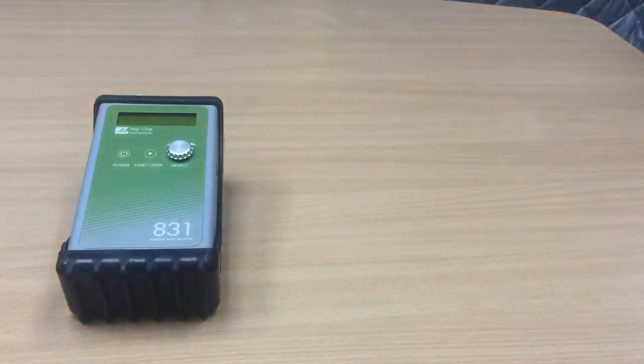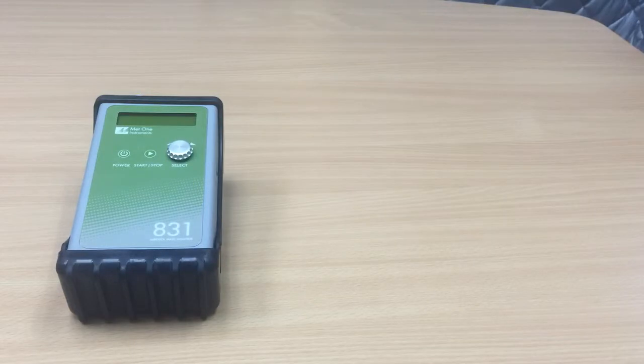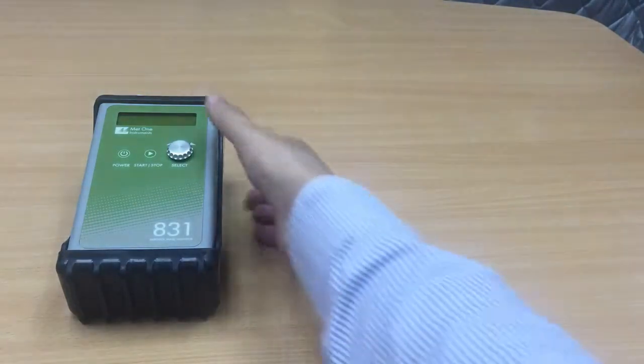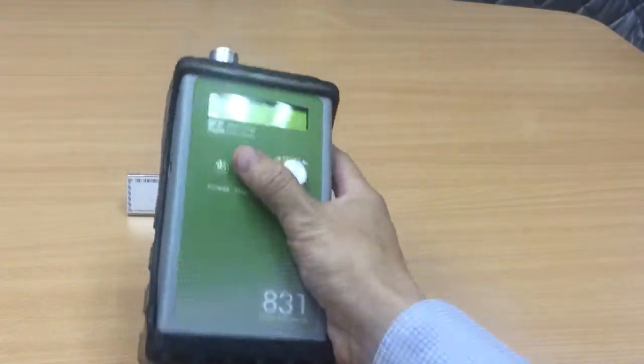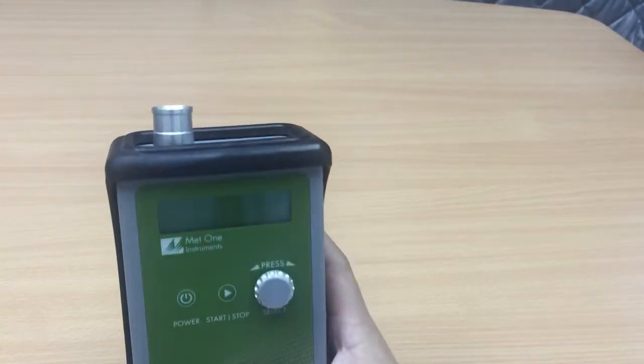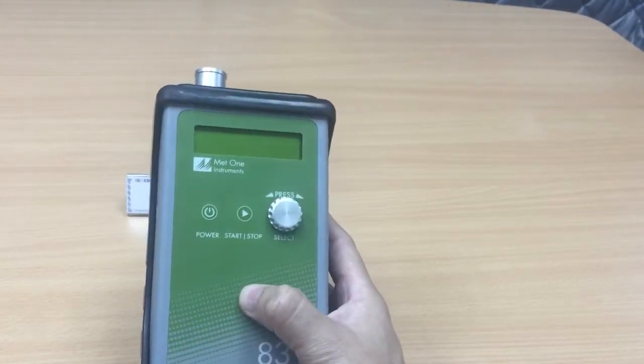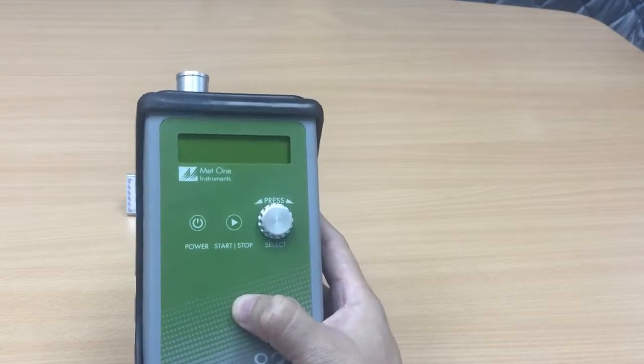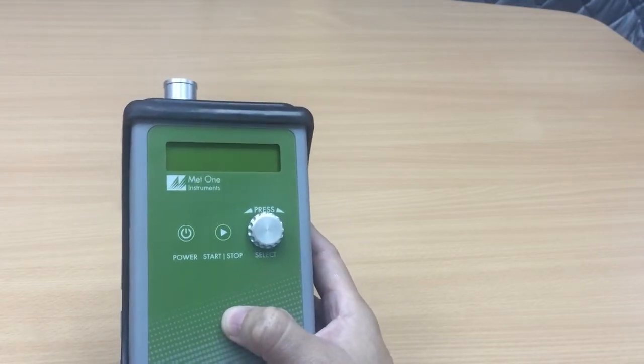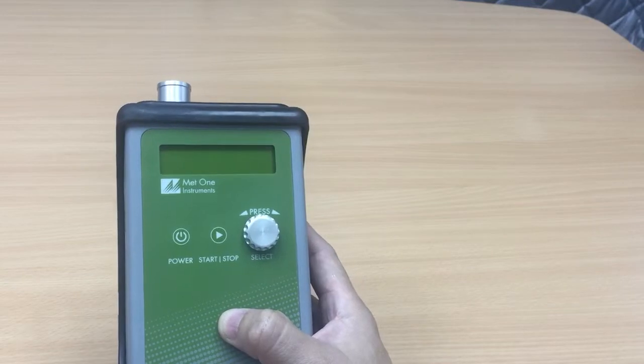Basically this Aeroset 831 is a small lightweight battery-operated handheld mass profiler. It counts and sizes particles in different size ranges and then uses a proprietary algorithm to convert the count data to mass measurements in micrograms per cubic meter.